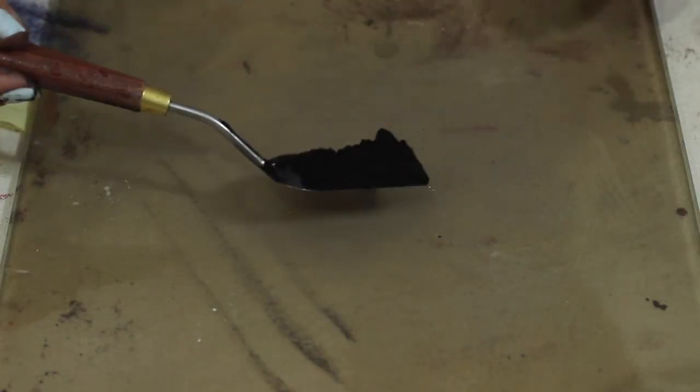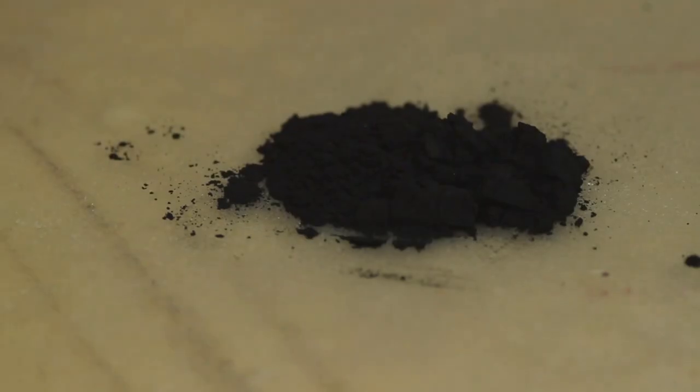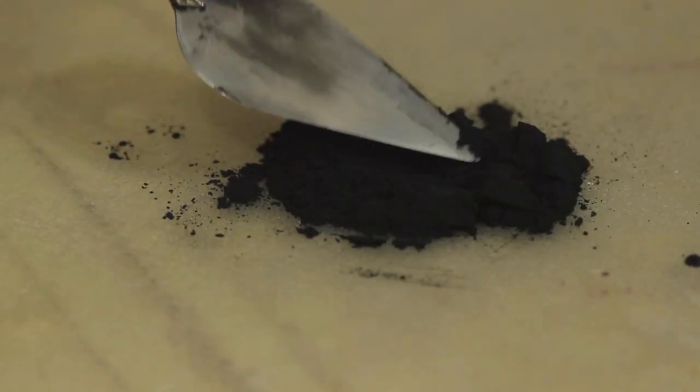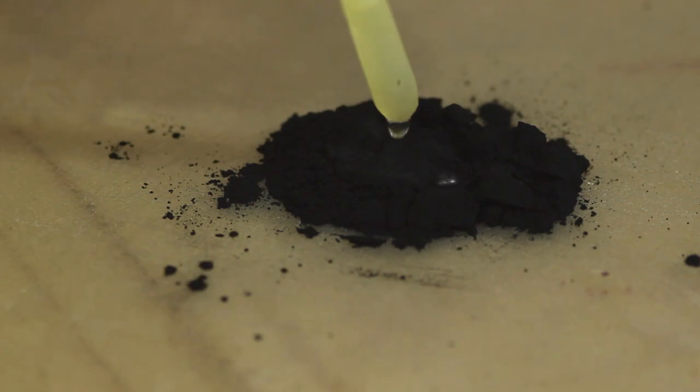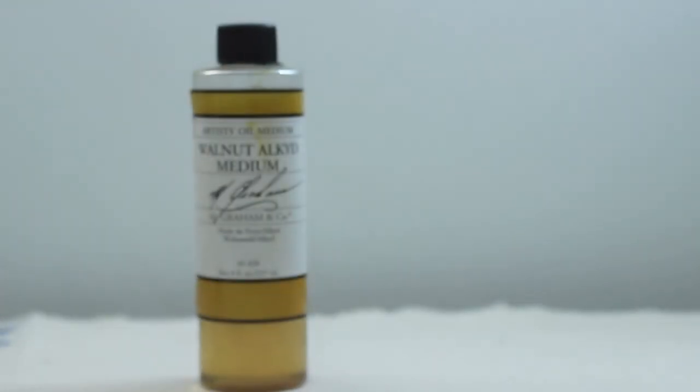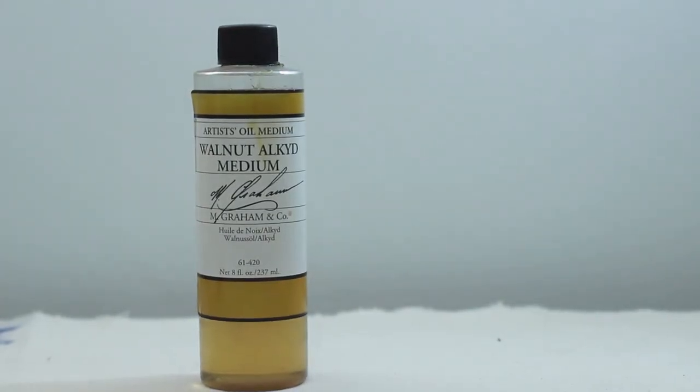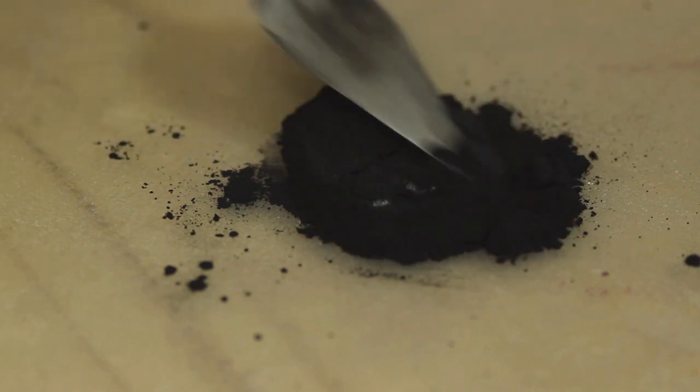I start by placing my charcoal on a glass slab and add a few drops of walnut alkyd to it. Walnut alkyd is my favorite medium because it dries quite quickly and is very stable. However, linseed oil is the most commonly used.